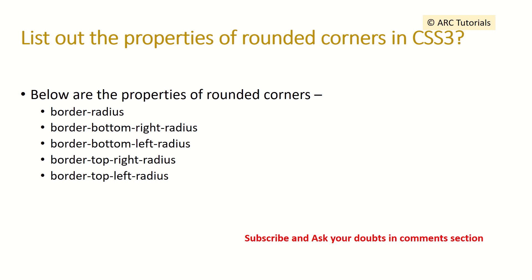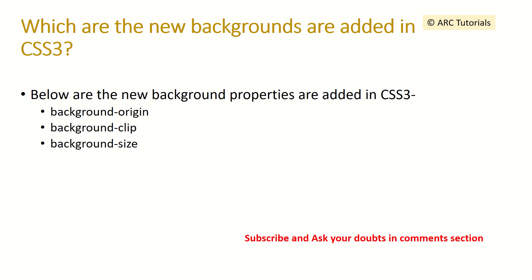List the properties of rounded corners in CSS3. The properties are border-radius (applies to all four corners), border-bottom-right-radius, border-bottom-left-radius, border-top-right-radius, and border-top-left-radius, which let you specify rounding for individual corners.